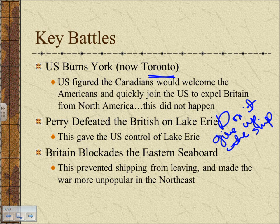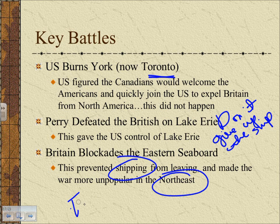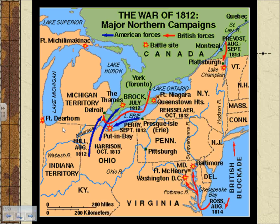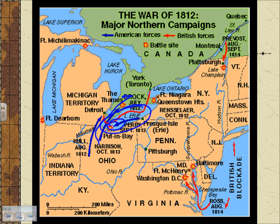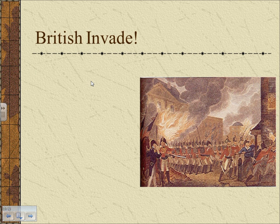Britain blockaded the eastern seaboard to prevent shipping from leaving, making the war very unpopular in the northeast among Federalists — some of whom rowed boats out to the British blockade to sell them goods. On the more extensive northern campaigns map, Harrison really pushed forward. Perry's huge victory on Lake Erie, combined with Harrison's push into Canada, led to a significant engagement at the Battle of the Thames.